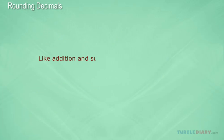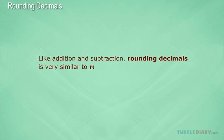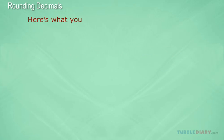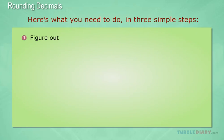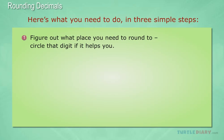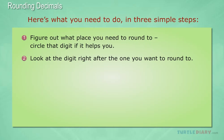Like addition and subtraction, rounding decimals is very similar to rounding whole numbers. Here's what you need to do in three simple steps. First, figure out what place you need to round to. Circle that digit if it helps you. Then look at the digit right after the one you want to round to.